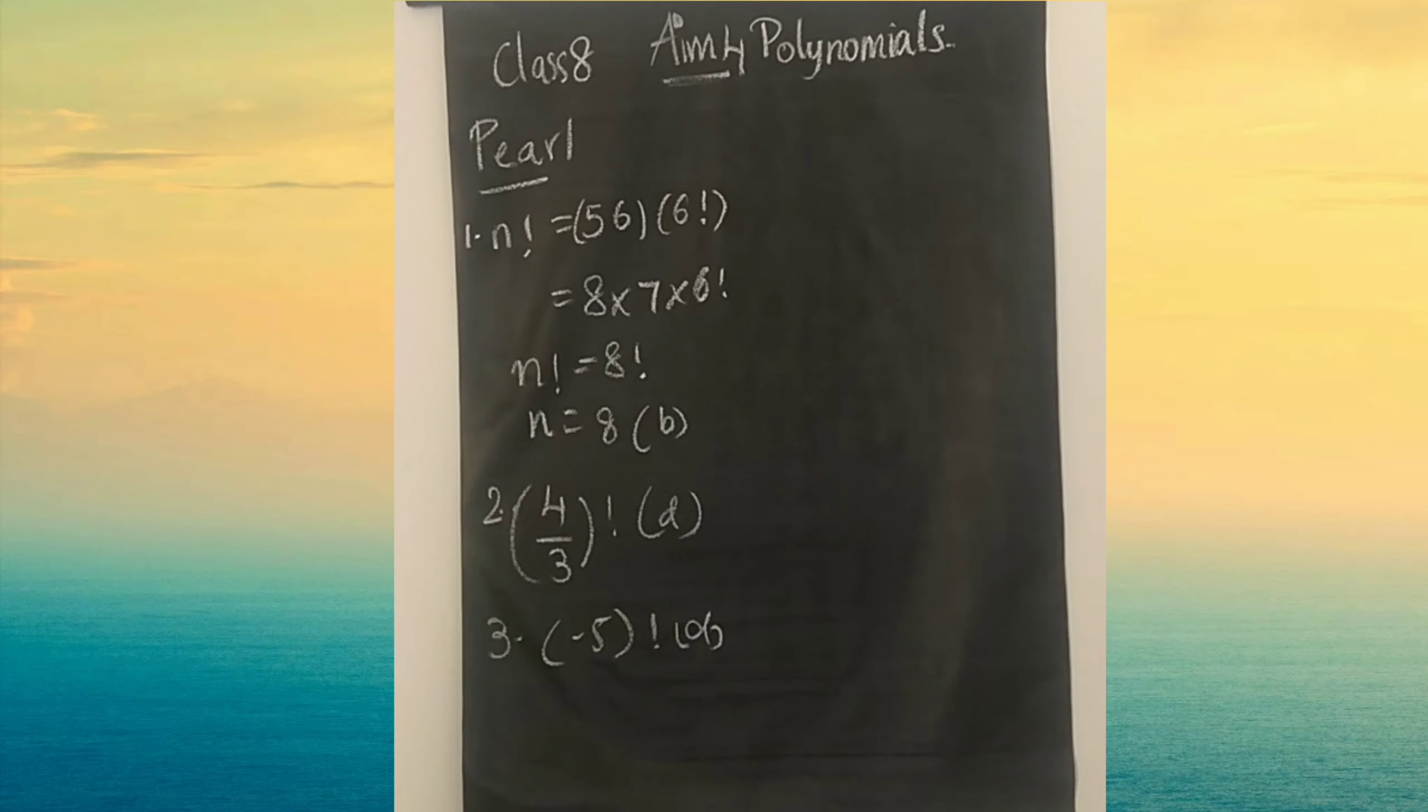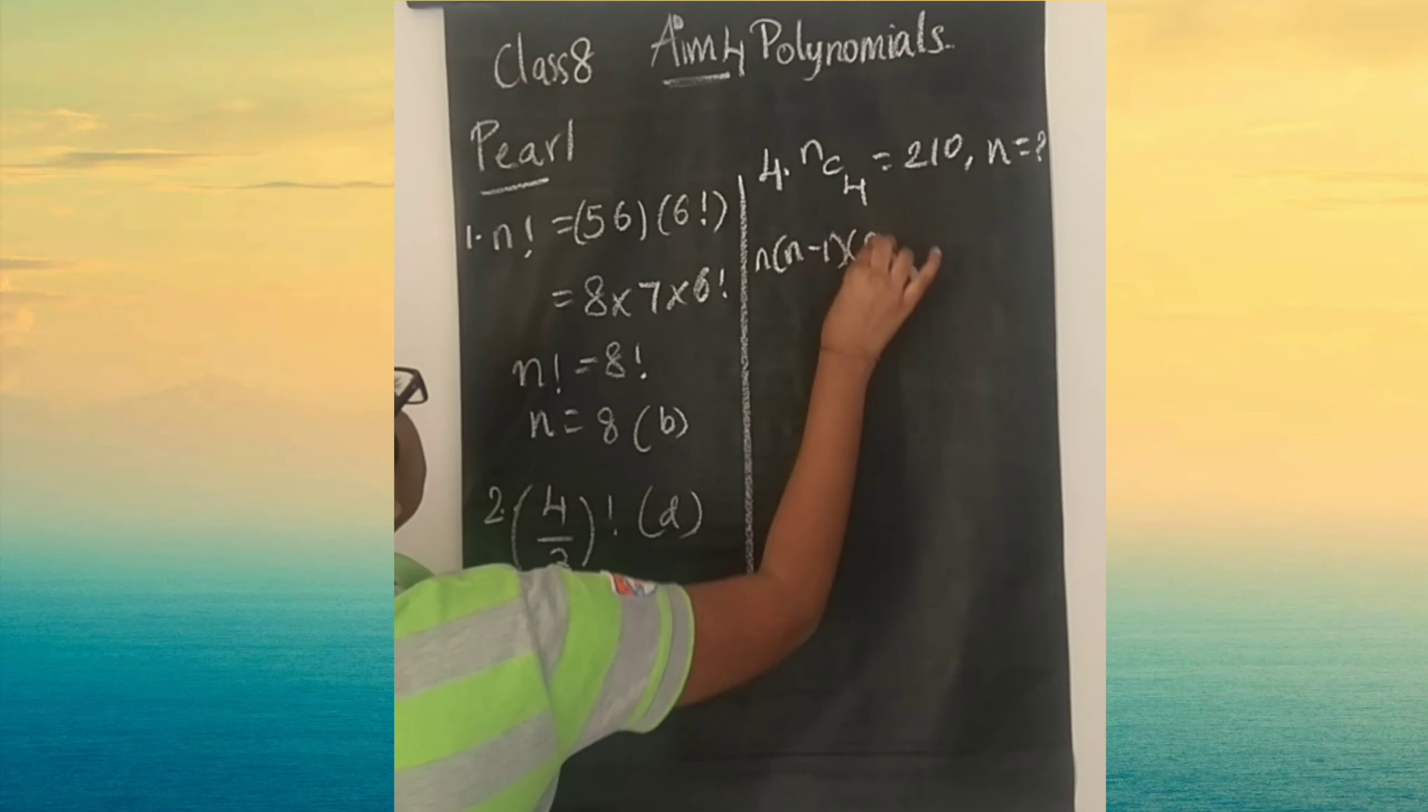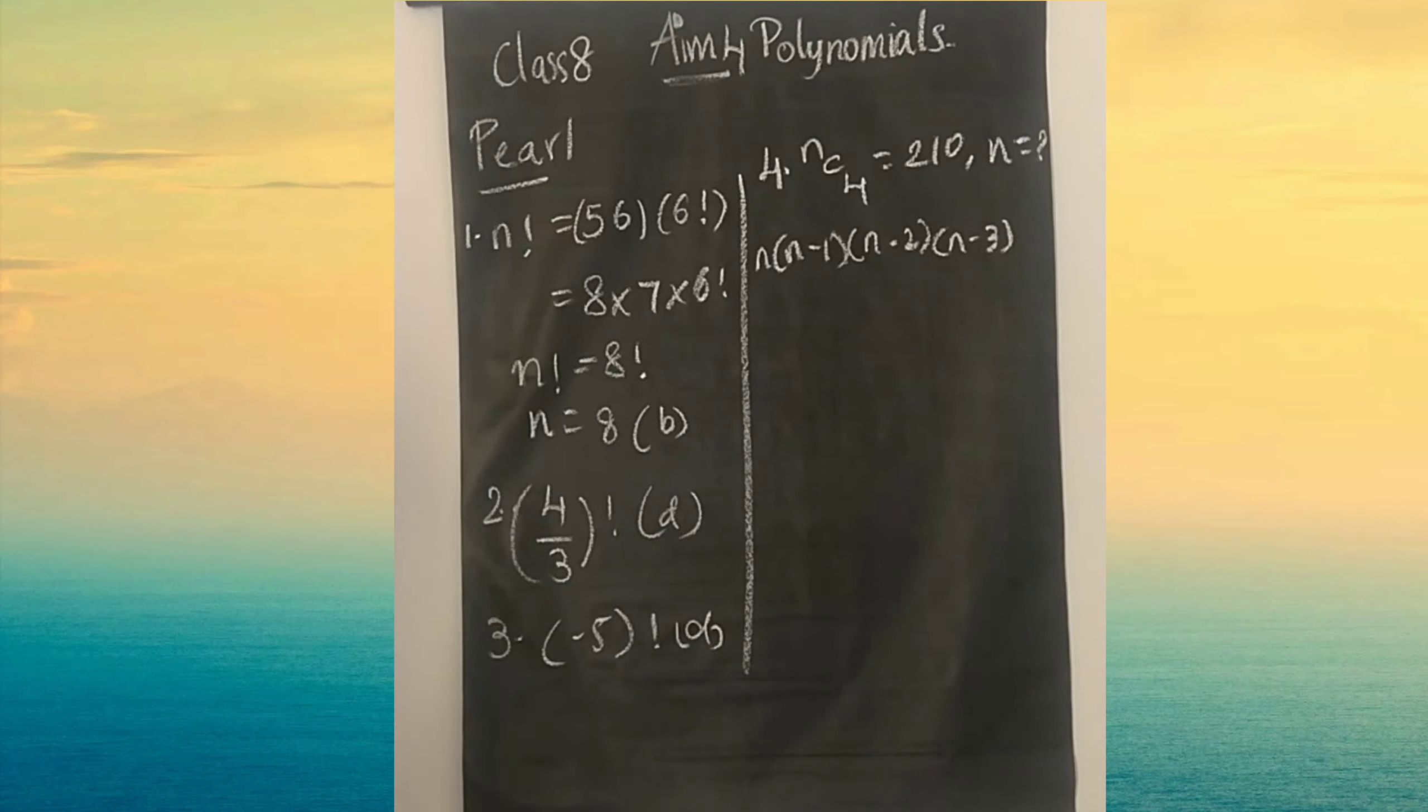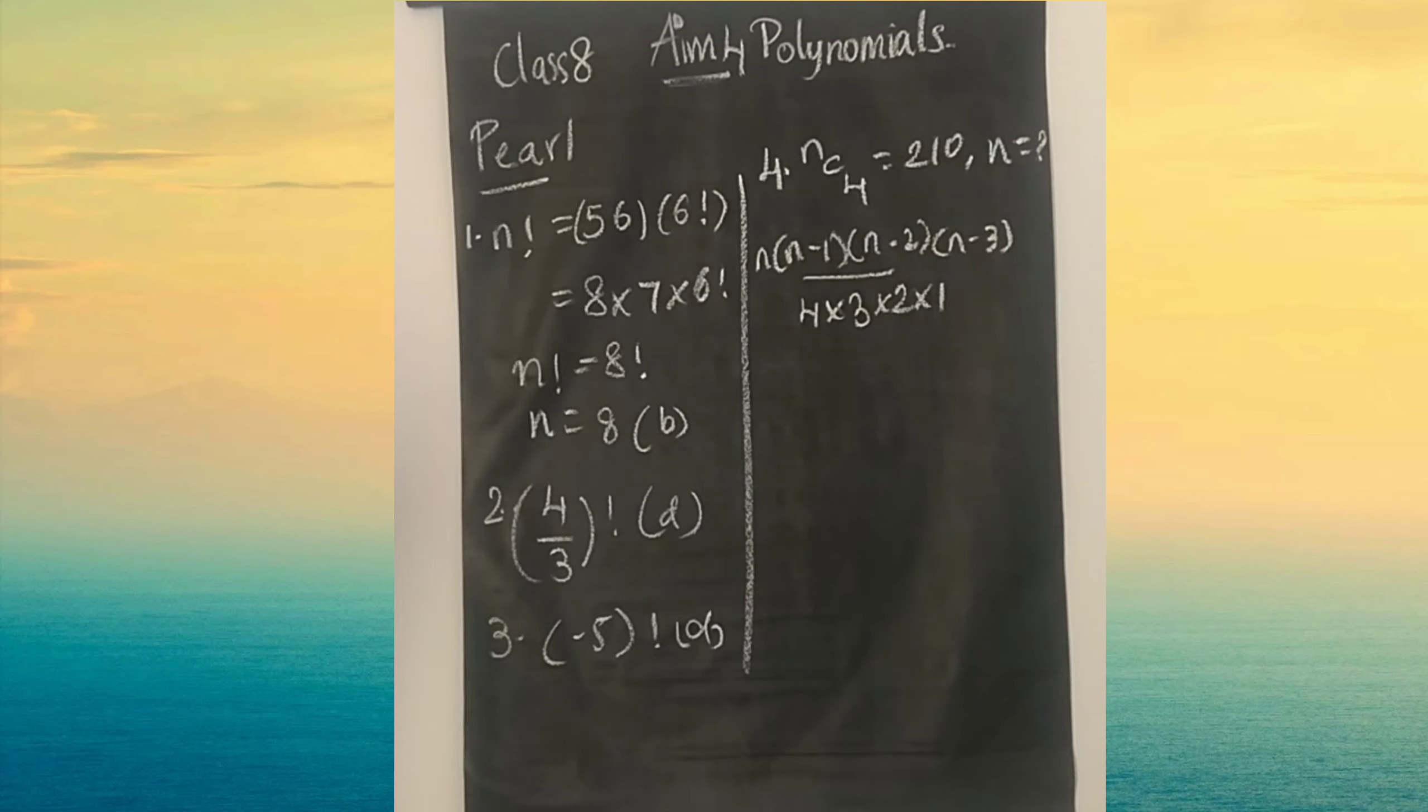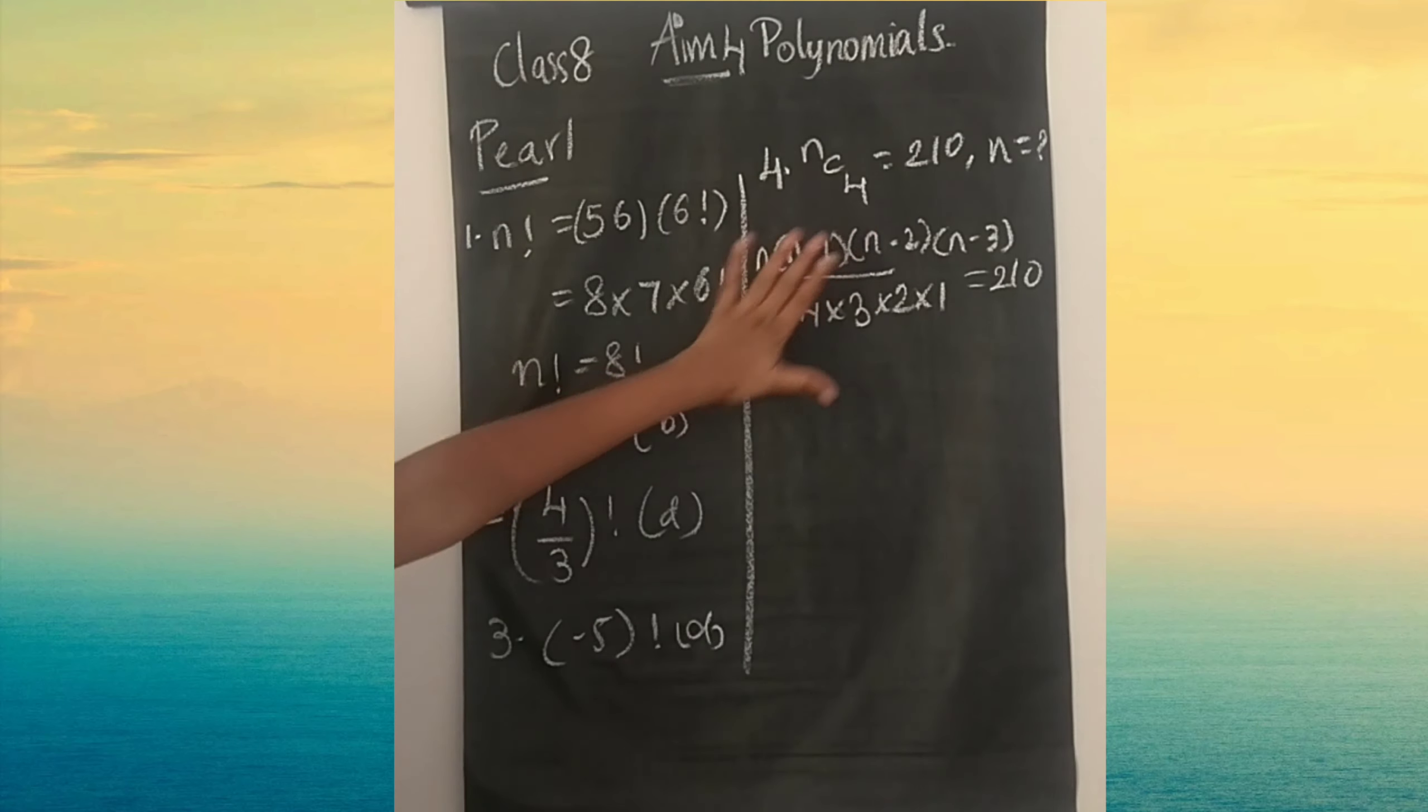Now let's look at the fourth question. The given data is nC4 is equal to 210. Then find the value of n. In this question we will use the formula itself. So nC4 means n into n minus 1 into n minus 2 into n minus 3 divided by 4 into 3 into 2 into 1.